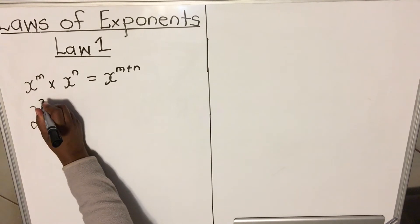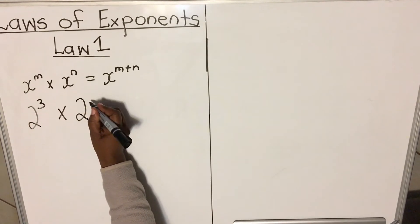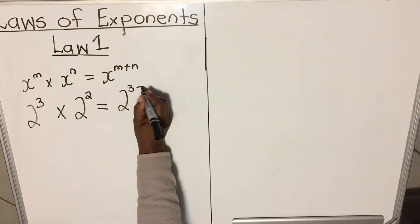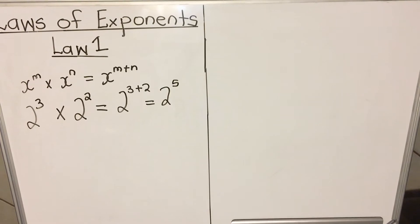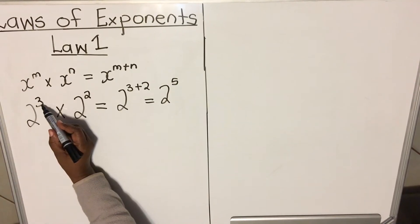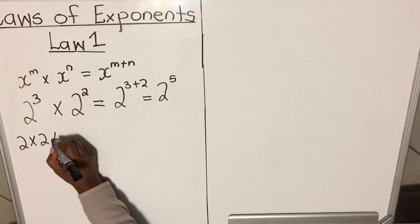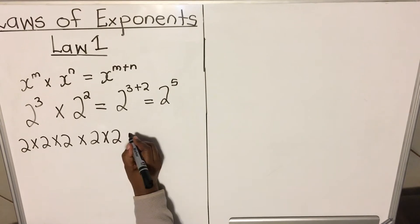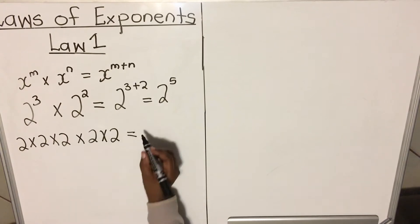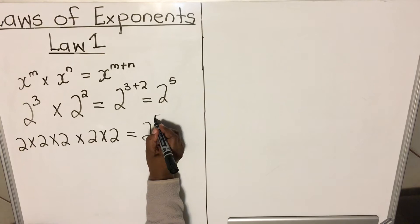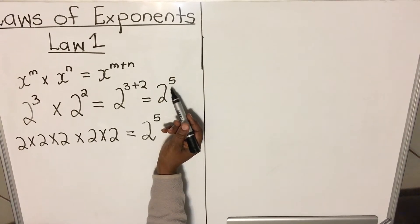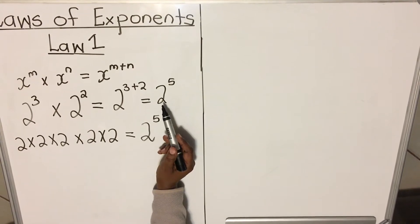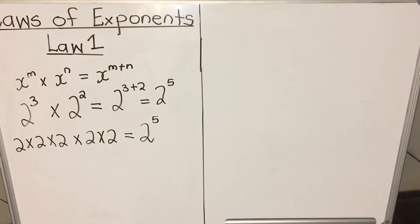Let's look at an example with numbers. If I have two to the power three multiplied by two to the power two, according to this law I add the exponents to get two to the power three plus two, which is two to the power five. Two to the power three is two multiplied three times, and two to the power two is two multiplied two times. Counting all the twos gives one, two, three, four, five — so it's two to the power five. You get the same result whether you use the law or expand it out.